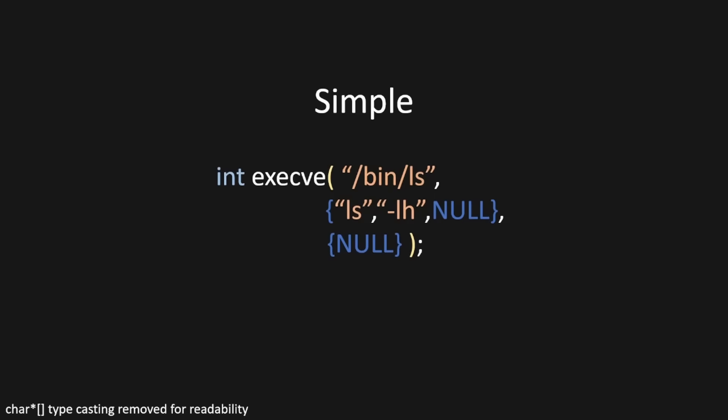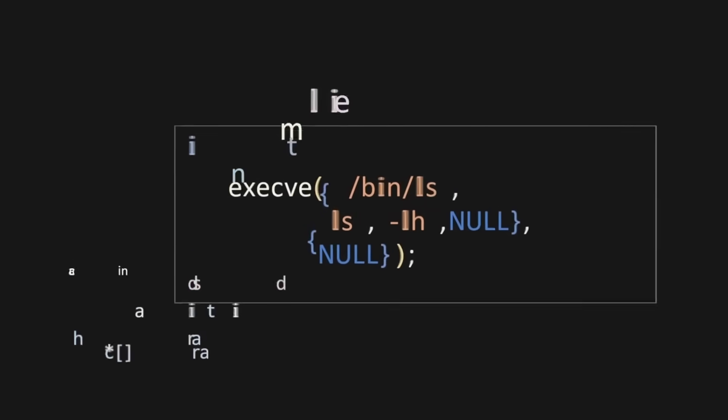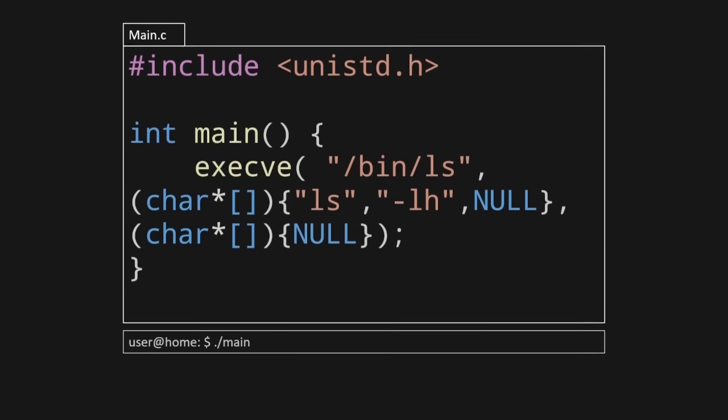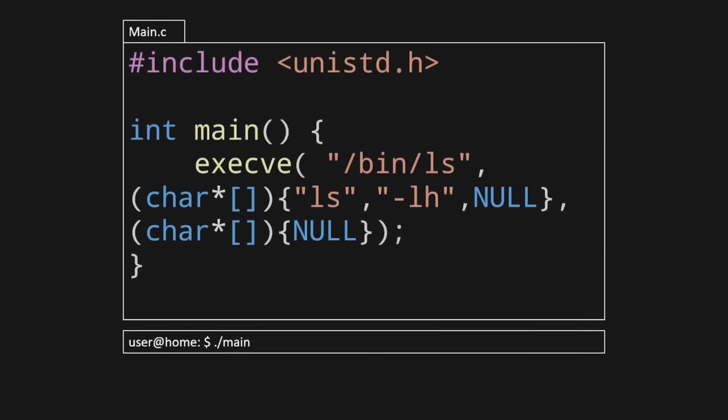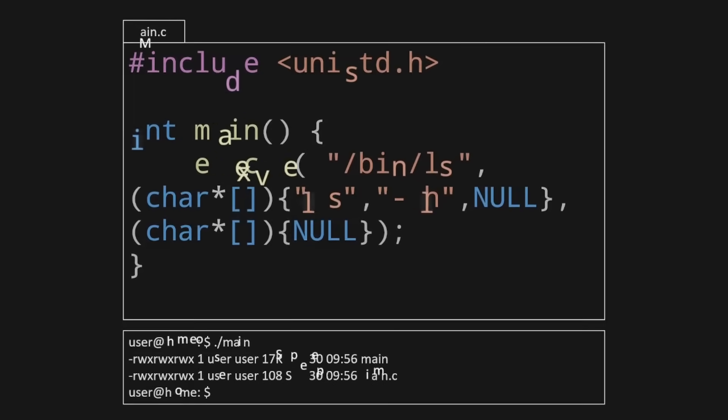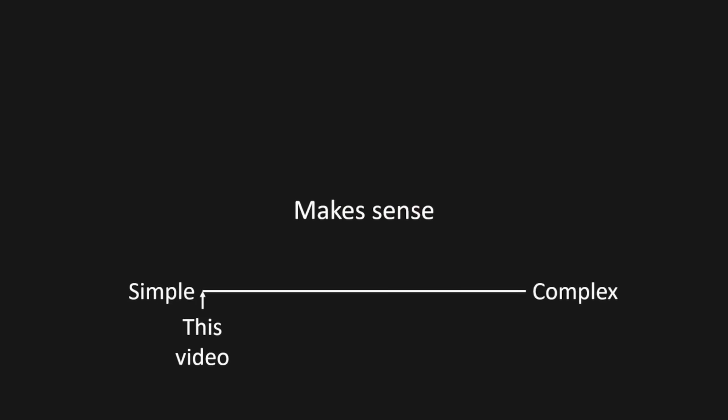Since this syscall actually exists as a mapping in user space, we can just call this from a C program if we want to build one. Here we've got a main.c — we have to include the standard Unix library so that we've got access to this syscall — and then we just pass in those parameters like we did before. If we compile this and run the main executable, we'll see that it runs ls. That's the simplest way to understand how programs are executed: we use the exec syscall.